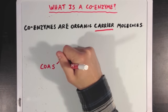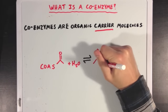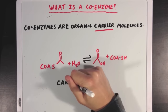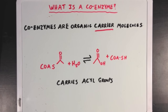Another example of a coenzyme is coenzyme A, which like NADH, acts as a carrier molecule, but instead of carrying electrons like NADH does, coenzyme A, which we sometimes call CoA, holds onto acyl or acetyl groups instead. And you'd see CoA appear quite often in metabolic reactions, where it'll carry these two carbon acetyl groups from one molecule to another.